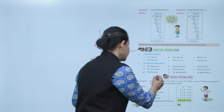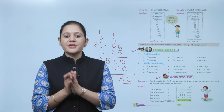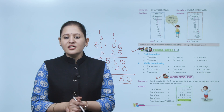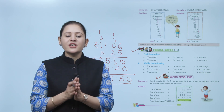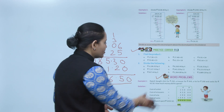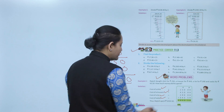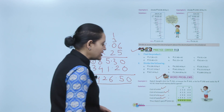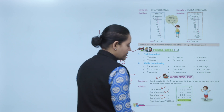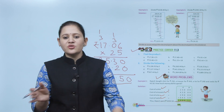Rajesh bought a shirt for rupees 250, a trouser for rupees 450, a tie for rupees 290, and socks for rupees 43.50. How much money did he spend? We add the cost of shirt, trouser, tie, and socks together. The total amount is rupees 1033.50. Always write paisa under paisa and rupees under rupees.